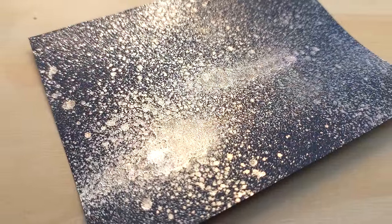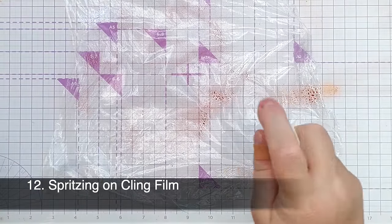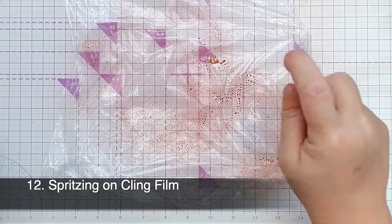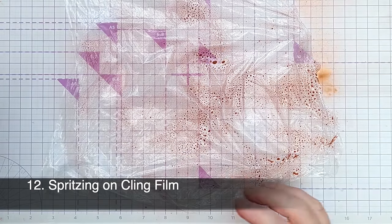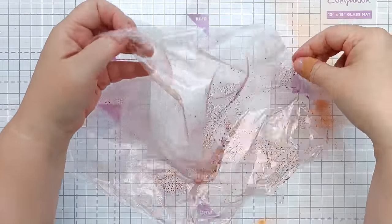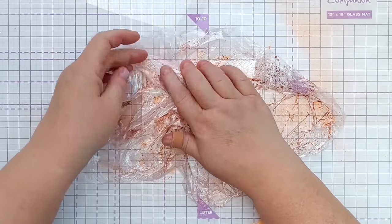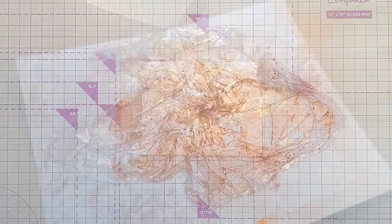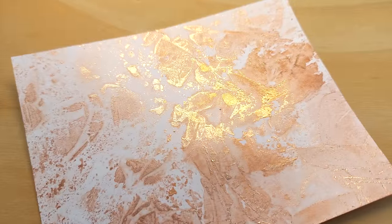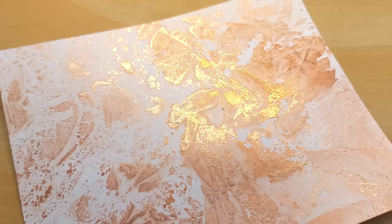For technique number twelve I spritzed my spray onto some cling film. I then flipped it over and scrunched it up on top of a piece of card and then I set it aside to dry. Once it was dry I peeled off the cling film and you can see what it looks like—you get these really interesting, almost cellular shapes with all that color and shimmer.